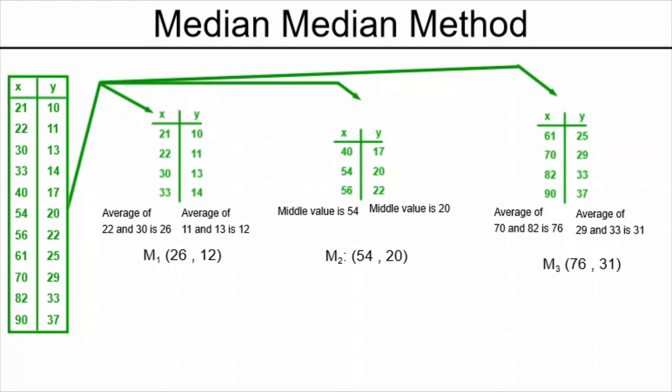Today's daily dose of math is an example of the median median method for finding the equation of the regression line from the points in a table of values that goes with the scatterplot. The first step is to make sure that the points in the table are arranged in increasing order of x.